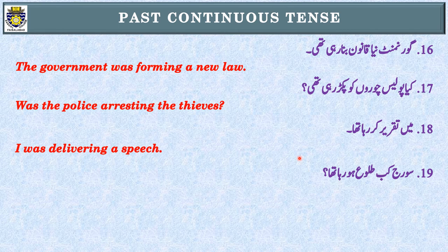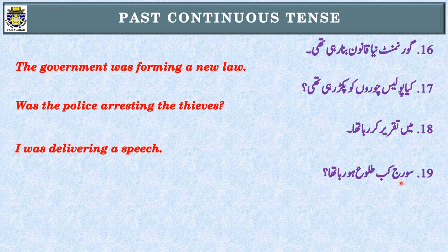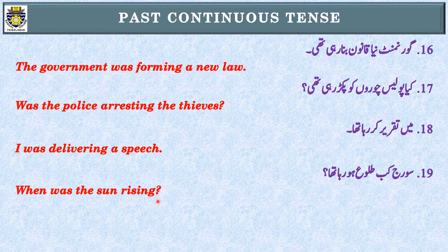Sentence number nineteen: سورج کب طلوع ہو رہا تھا؟ First step: 'رہا تھا' — Past Continuous Tense۔ Second step: 'کب' WH family کا word ہے، اسے ignore کریں — subject 'سورج' (the sun) — singular، was use کریں گے۔ Interrogative بنانے کے لیے: Was the sun rising? پھر اس سے پہلے 'کب' کی English 'when' لکھ دیں: When was the sun rising? یاد رکھیں — غلطی سے 'When the sun was rising' مت لکھیں؛ WH word کے فوری بعد helping verb آتی ہے جب یہ direct interrogative ہو۔